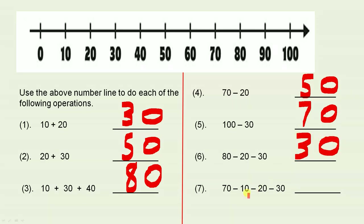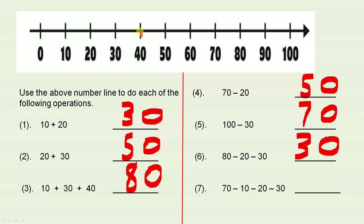And the final one: seventy take away ten, take away twenty, take away thirty. Here's your seventy — take away ten: that's ten. Take away twenty: ten, twenty. Take away thirty: ten, twenty, thirty. We've landed on the ten, so the answer is ten.